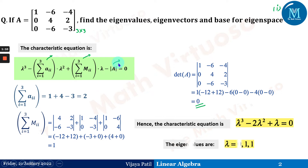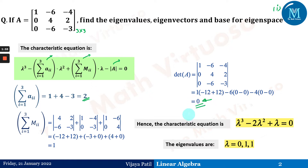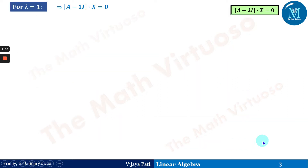The eigenvalues are λ = 0, 1, 1. We can verify: 0 + 1 + 1 = 2, which is the sum of eigenvalues (trace), and 0 × 1 × 1 = 0, which equals the determinant of A. So the eigenvalues 0, 1, 1 are confirmed, and we have one repeated value: λ = 1.